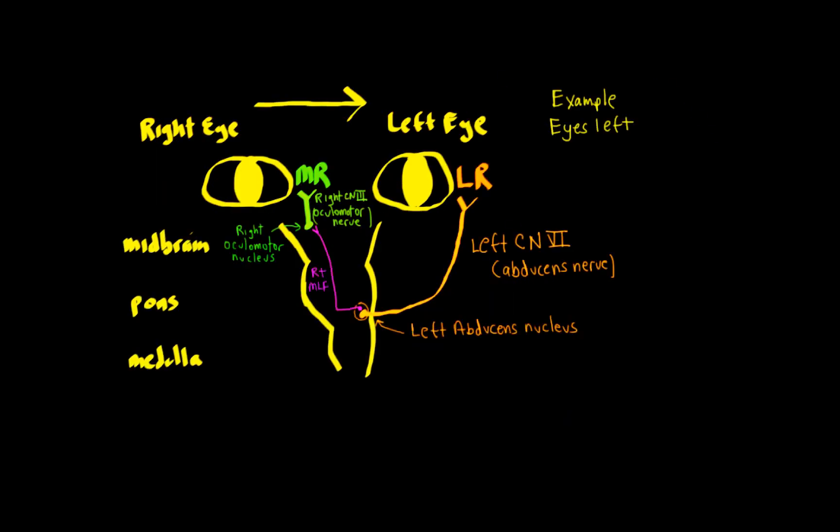Okay, now this is a review from what we had last time in another video. We have the eyes going left, and now let's put in some additional elements. We have a right and left ear with the external, middle, and inner ear, and then we have our vestibular apparatus, the right horizontal semicircular canal, and the left horizontal semicircular canal found in the inner ear.